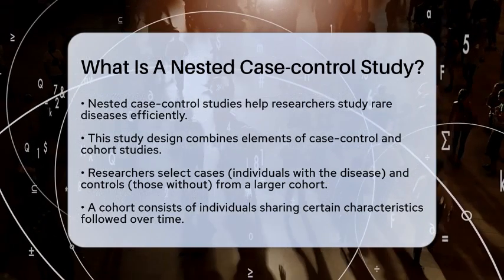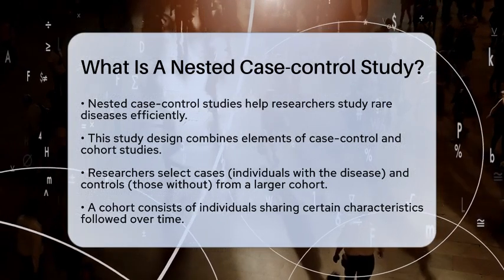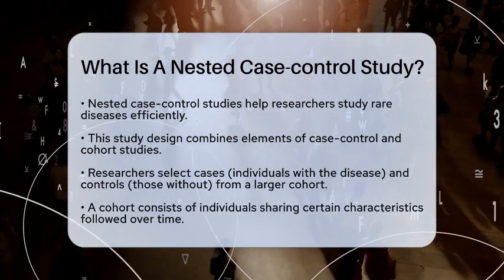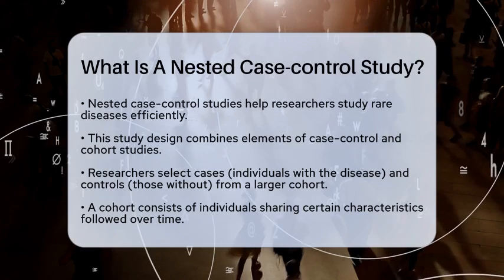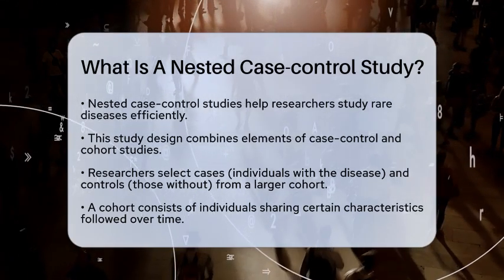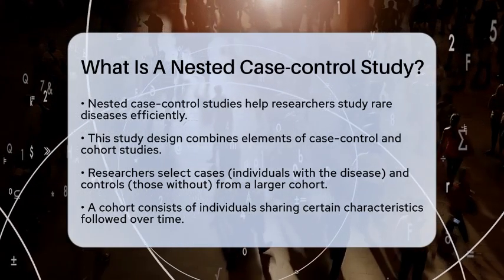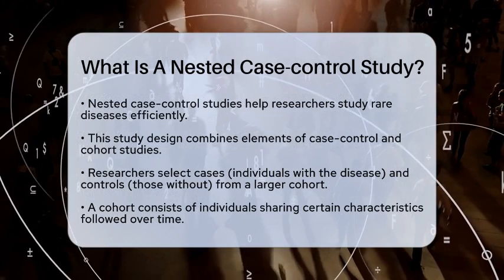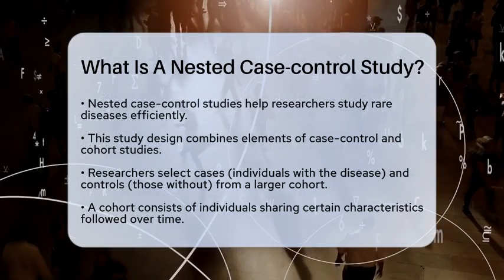In a Nested Case Control Study, researchers select cases and controls from a larger cohort. A cohort is simply a group of individuals who share certain characteristics and are followed over time. For example, if researchers are studying a specific disease, the cohort might consist of individuals who are at risk for that disease.